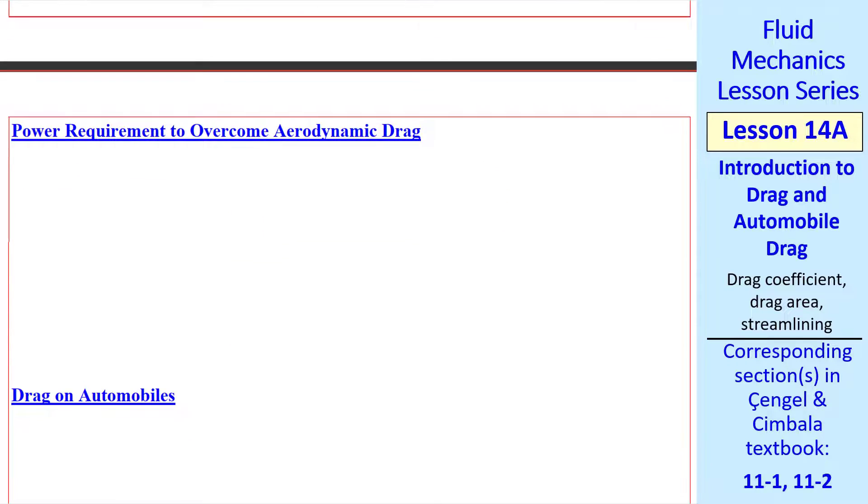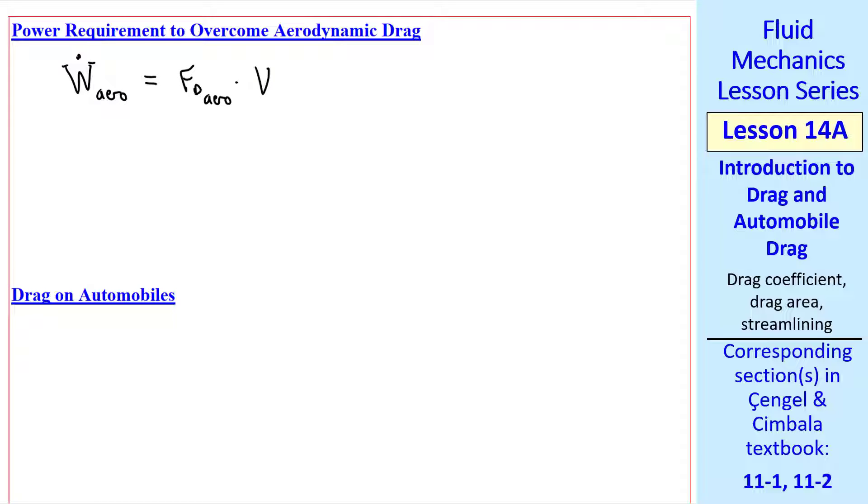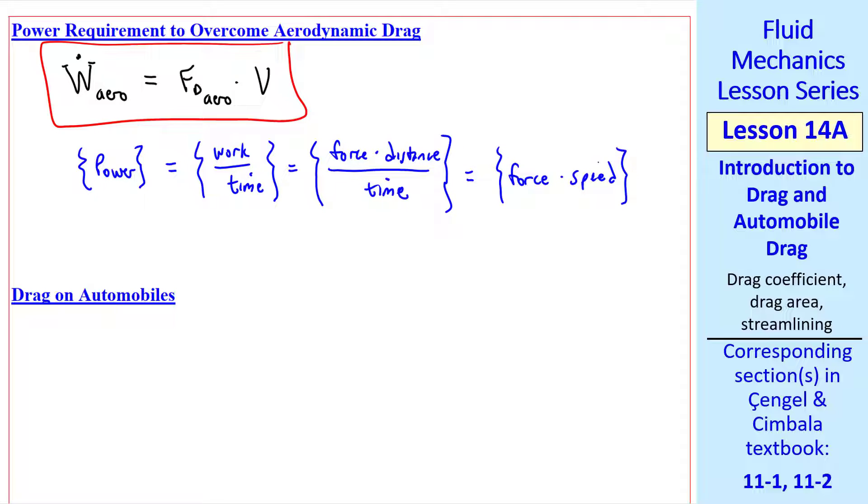Now let's look at the power requirement to overcome aerodynamic drag. We use capital W dot as power, rate of work. The power required to overcome aerodynamic drag on a body is simply the aerodynamic drag times the speed. Power is defined as work per time, and work is force times distance, and distance per time is speed. So F aero times V has the correct dimensions of power.